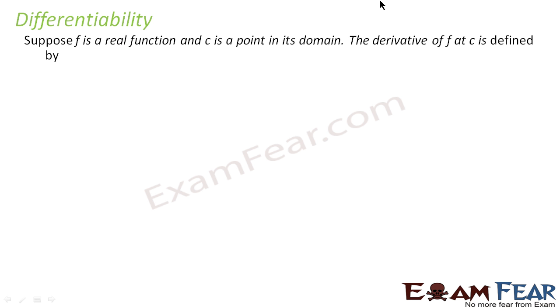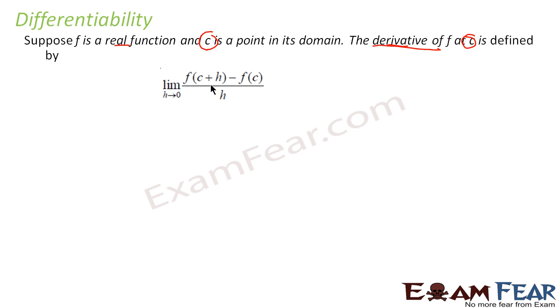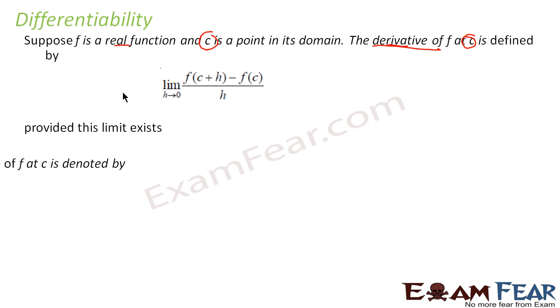Now, what is the value of the function when you differentiate at point c? Let's say we have a real function and c is a point in its domain and we have to find the derivative of f at point c. The derivative of f at point c will be f(c+h) minus f(c) divided by h. Please remember this formula — the derivative of f at c is f(c+h) minus f(c) divided by h, provided the limit exists.